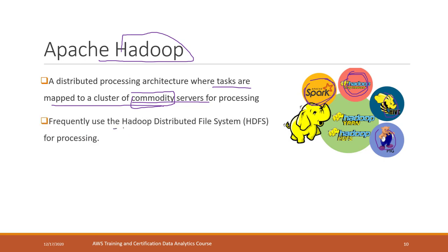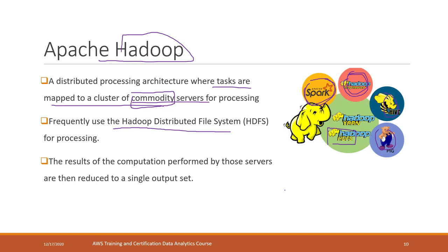We frequently use the Hadoop distributed file system, so that is HDFS, for the processing. The data is transformed into HDFS, and we're using Spark or MapReduce to process the data. And the results of the computation that is performed by those servers are then reduced into a single output. So those are two steps. The first step is called Map, and the second step is called Reduce.